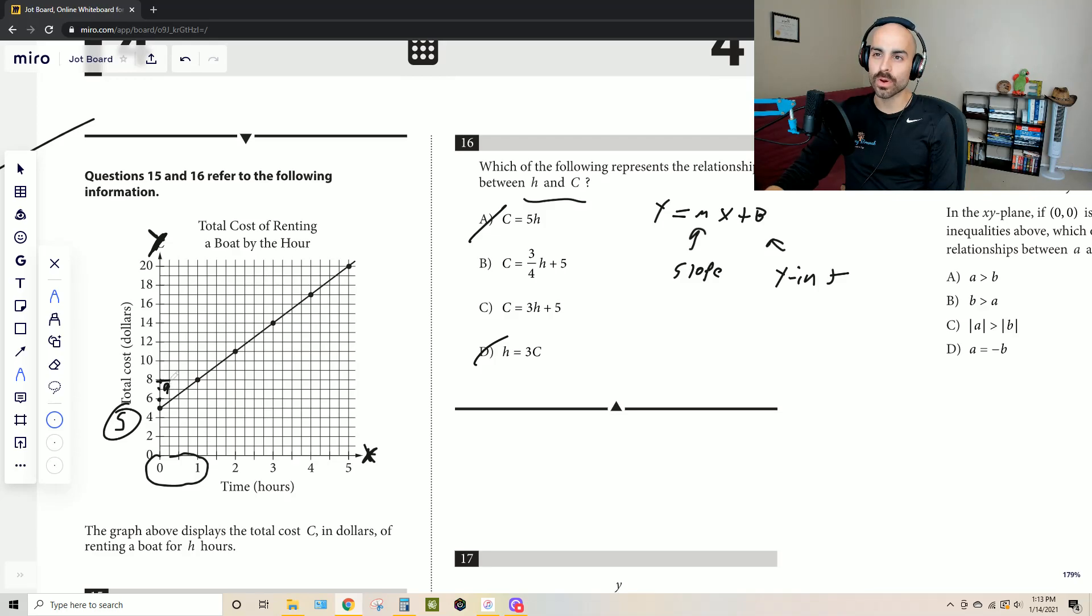So we have rise of three, but we only have a run of one because we go from zero to one, right? This is probably a mistake that a lot of you made if you thought it was B when it turns out it is C.